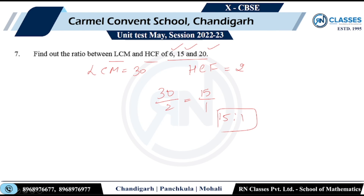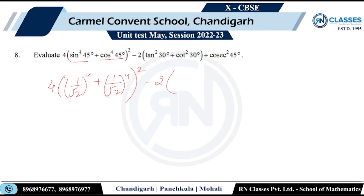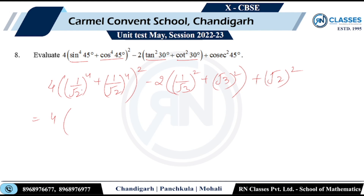Question eight: evaluate 4(sin 45°)⁴ + (cos 45°)⁴) − 2(tan 30°)² + (cot 30°)²) + (cosec 45°)². Substituting standard values: sin 45° = cos 45° = 1/√2, tan 30° = 1/√3, cot 30° = √3, cosec 45° = √2. So we get 4 × (1/√2)⁴ + (1/√2)⁴) which equals 4 × (1/4 + 1/4) = 4 × 1/2 = 1 for the first part.